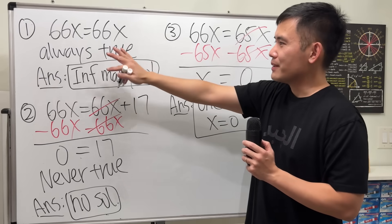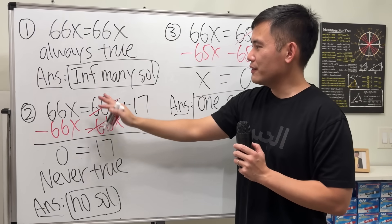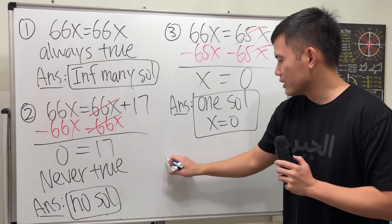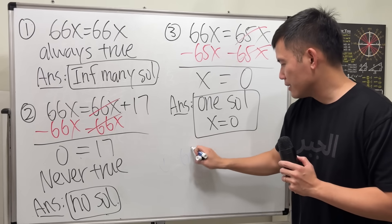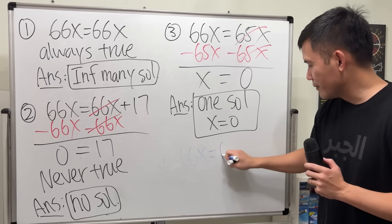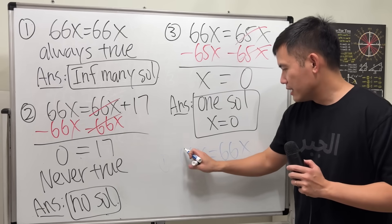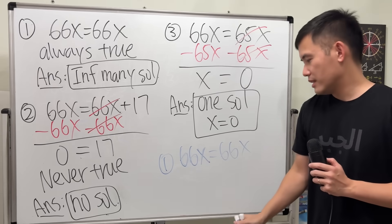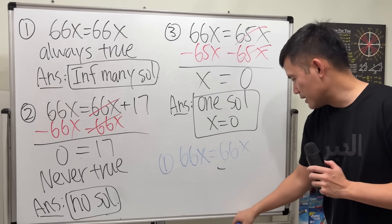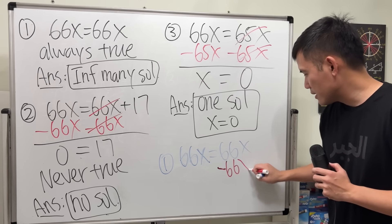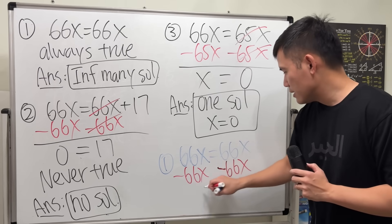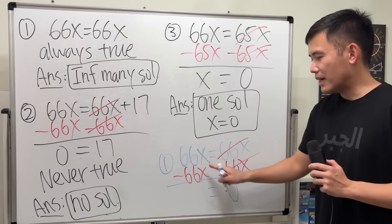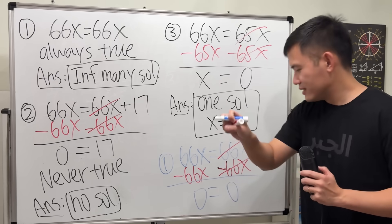First situation, infinitely many solutions. If you wanted to revisit example number 1 again: 66x equals 66x. If you want to do what we did, if you subtract 66x from both sides, these cancel. On the right-hand side you get 0, but on the left-hand side you also get 0.